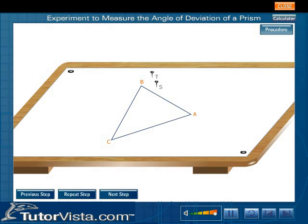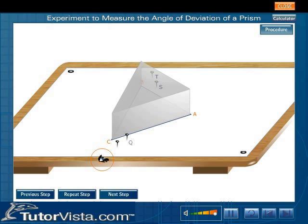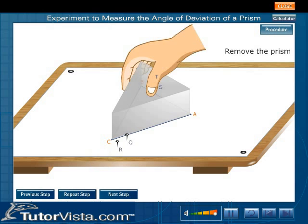Fix two pins T and S on one side. Place the prism on the boundary ABC. Looking to the other side, fix two more pins Q and R in such a way that all four pins appear to be in the same line.